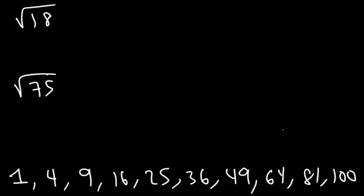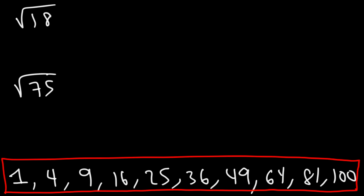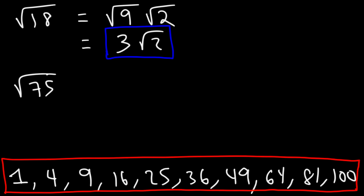18 and 75 are not perfect squares, so how do we simplify their square roots? You can break up the number into two smaller numbers, one of which contains a perfect square. 18 is divisible by 9, so write the square root of 18 as the square root of 9 times the square root of 2. The square root of 9 is 3, so the final answer is 3√2.